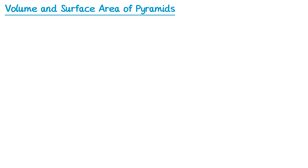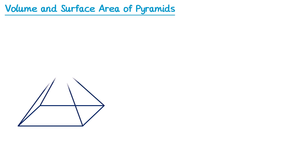A pyramid is formed by taking a two-dimensional base, like this quadrilateral here, and then joining lines from each of the corners of this shape to a point above the base, like this.